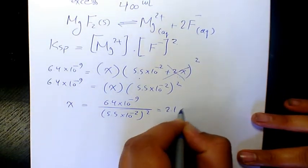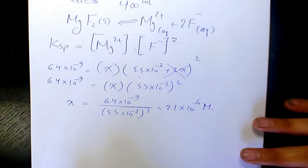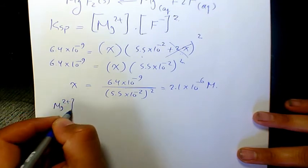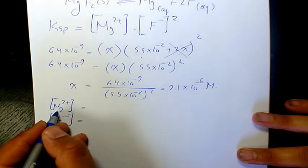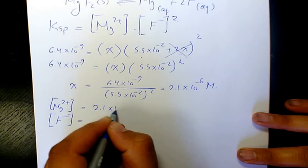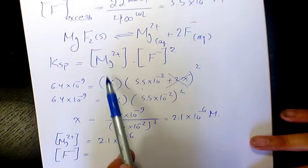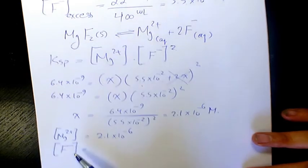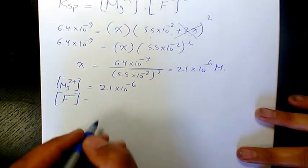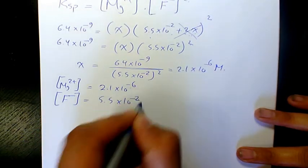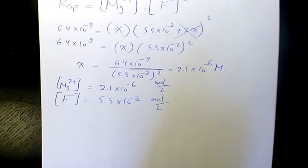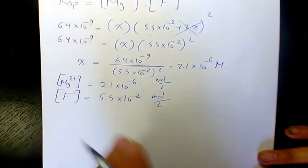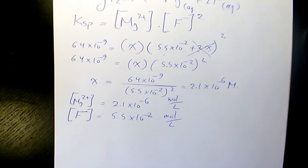Solving gives x = 2.1×10⁻⁶ M. So the equilibrium concentration of Mg²⁺ is 2.1×10⁻⁶ mol/L, because that equals x. The fluoride concentration remains 5.5×10⁻² mol/L, because 2x is much smaller than 5.5×10⁻². These are the equilibrium concentrations of Mg²⁺ and F⁻. I hope you enjoyed this video — please leave a comment if you have any questions. Thank you for watching and have a great day.